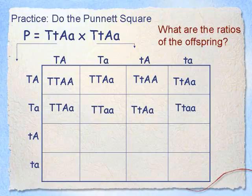Now I'm going to fill across the second row. First box: big T with big T, big A with little a. Second box: big T with big T, little a with little a. Third box: big T with little t, big A with little a. Fourth box: big T with little t, little a with little a.